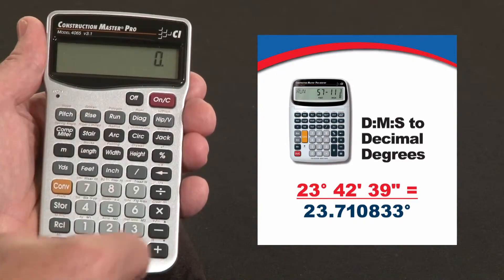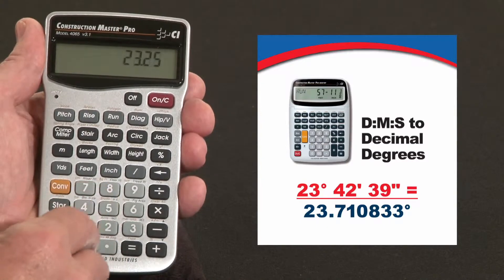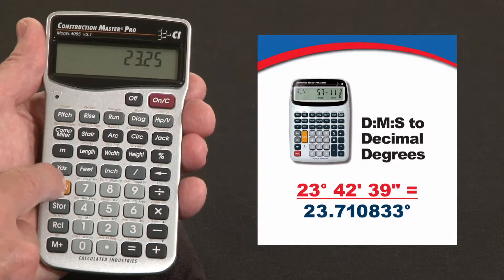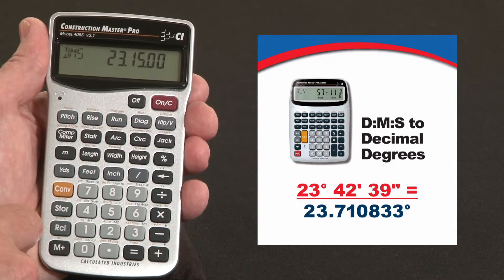If you've got a set of plans that says something like 23.25 degrees, what is that in DMS? Convert decimal point. It's 23 degrees, 15 minutes, and no seconds.